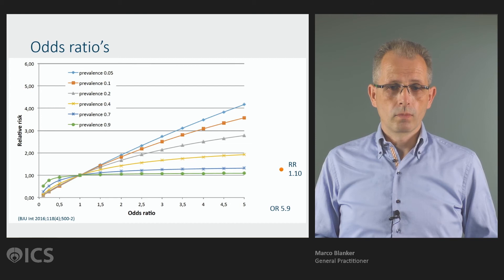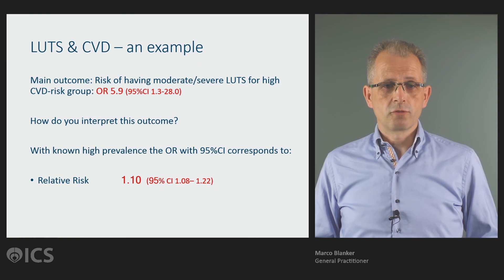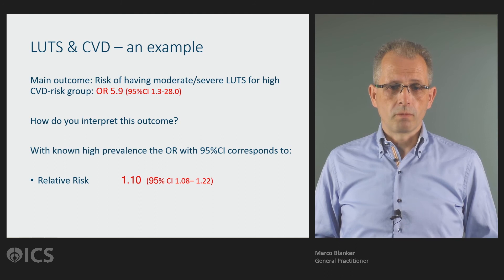So this main outcome that was published — the risk of having moderate to severe lower urinary tract symptoms for the high cardiovascular disease risk group, with an odds ratio of 5.9 — given its high prevalence, we know that the relative risk is just 1.10.